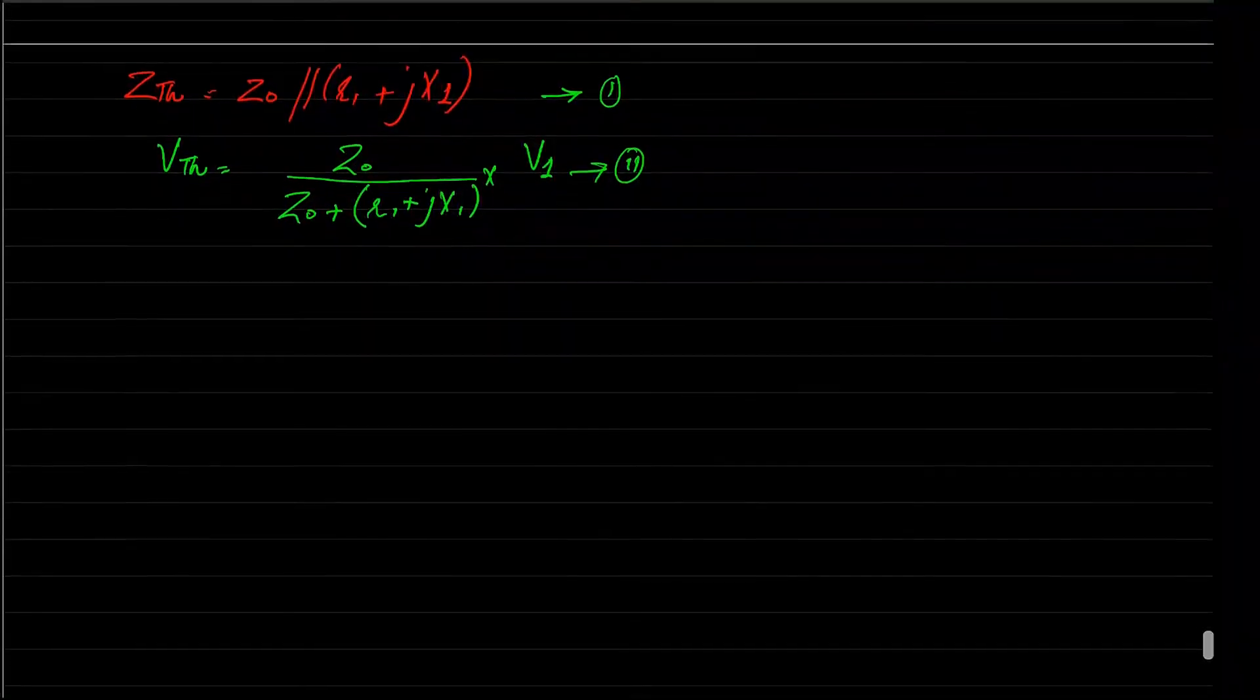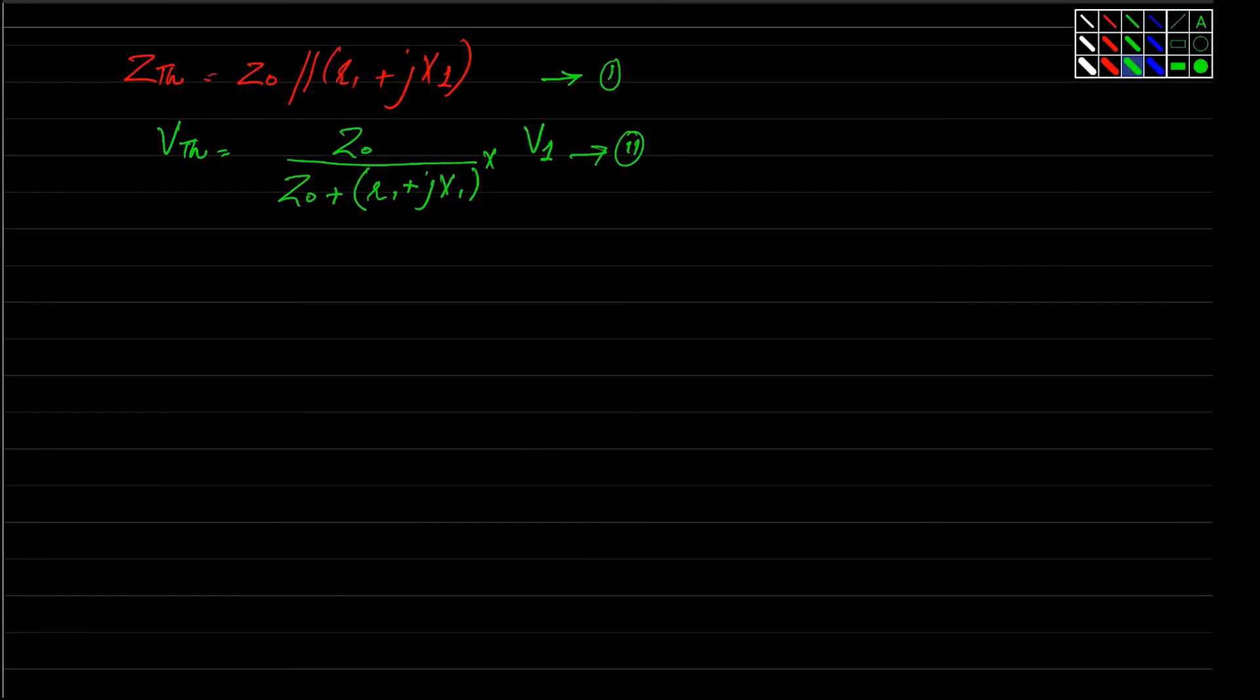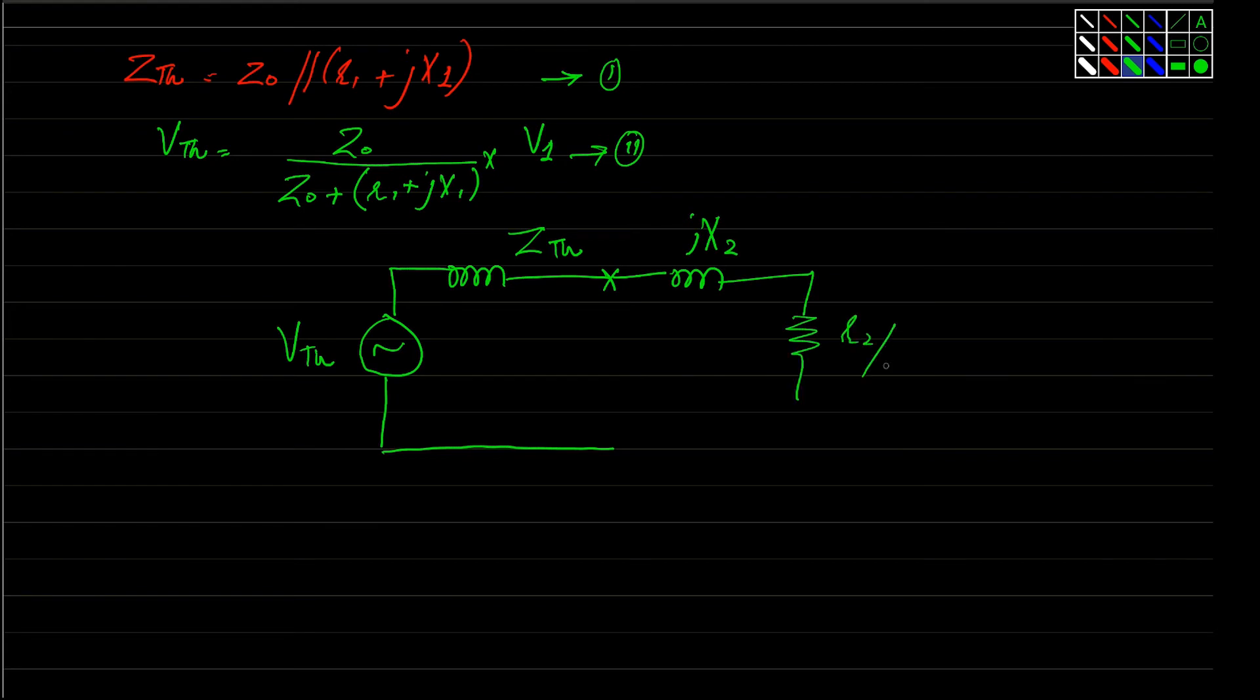So finally you have an equivalent diagram that will be very simple and handy to calculate our numericals. Which will be our VTh, and this is ZTh. And here you have the leakage reactance of the rotor and ultimately you have this R2 by S.